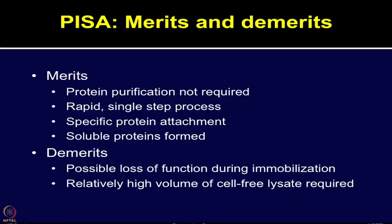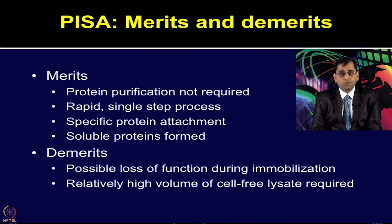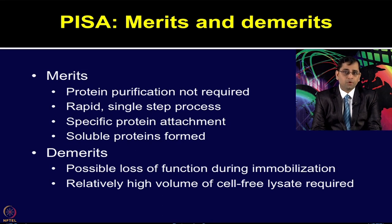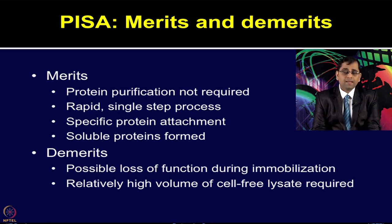PISA method overcomes traditional purification requirements for producing protein microarrays — protein purification is not essential. It gives a rapid single-step process. Because of histidine tag and Nickel-NTA interaction, specific protein attachment can be achieved, and soluble proteins are formed. These are the major advantages of protein in situ arrays. Regarding limitations: there is possible loss of function during the immobilization step, and cell-free lysates are very costly, so high volumes of cell-free lysate become a cost-based limiting factor for this platform.